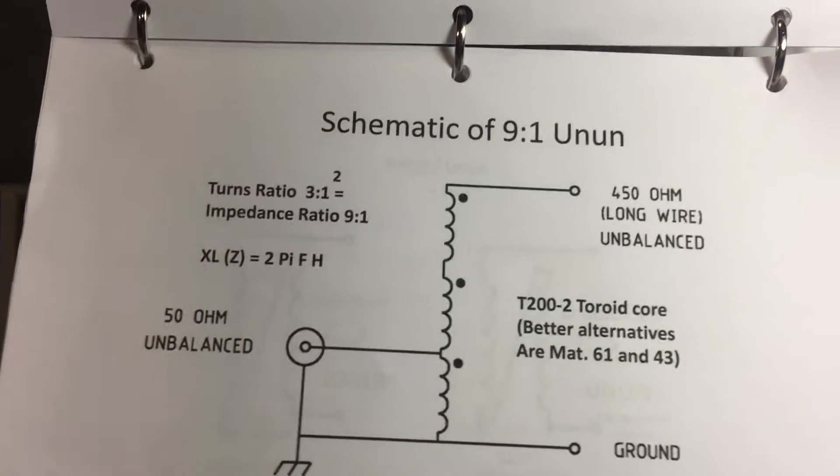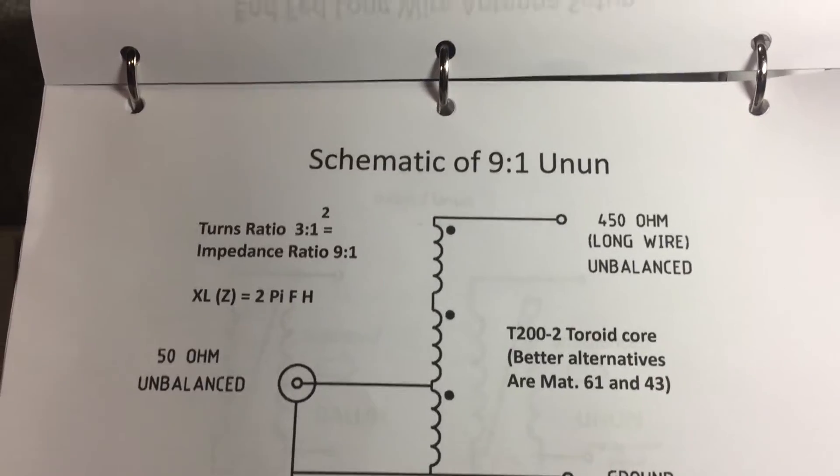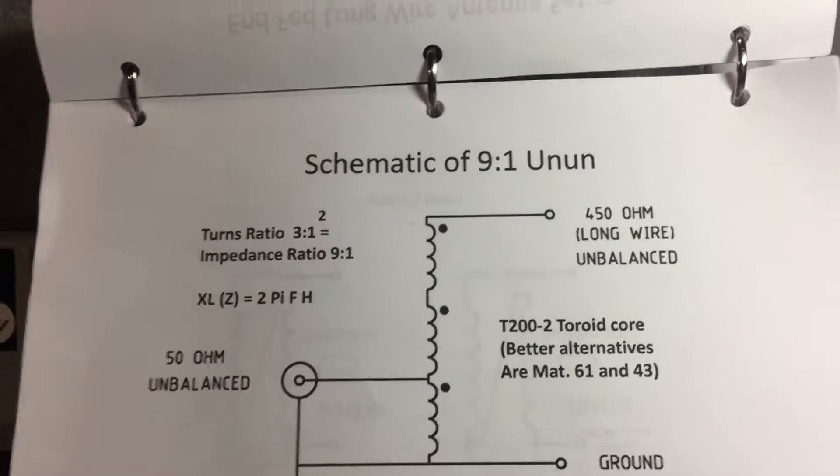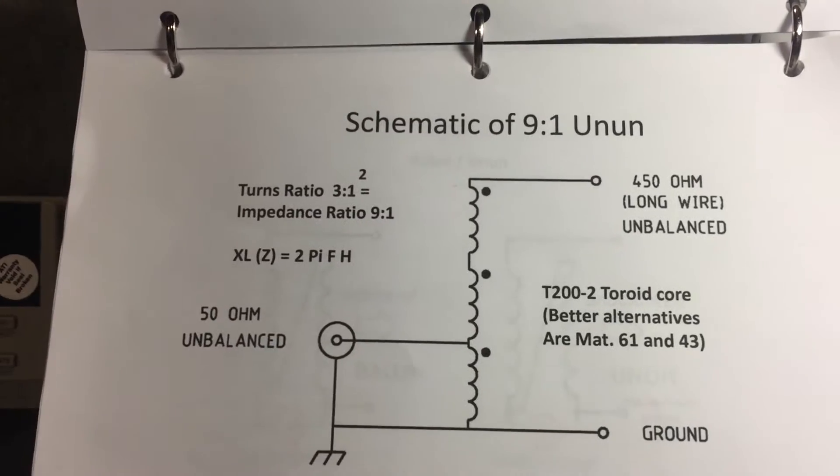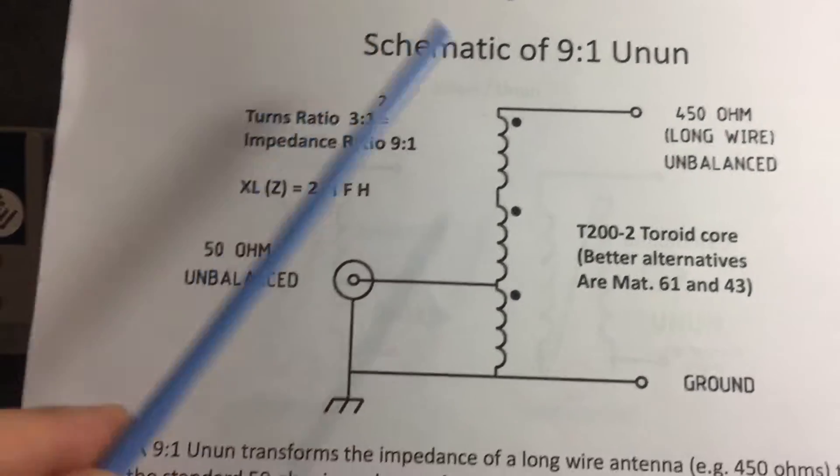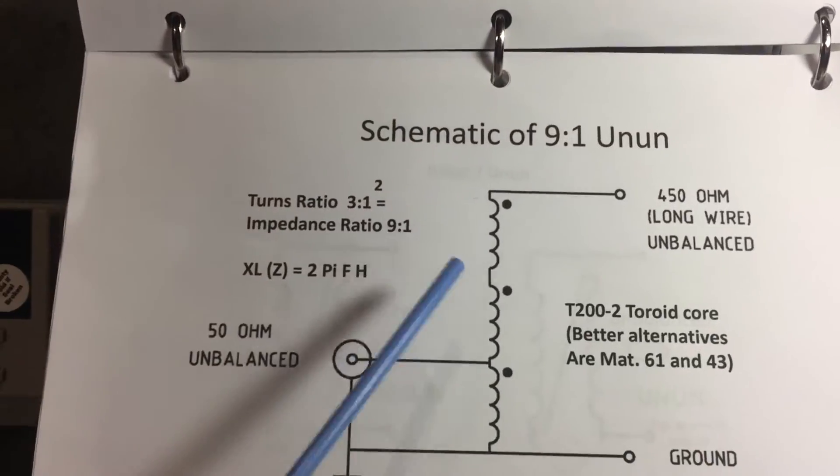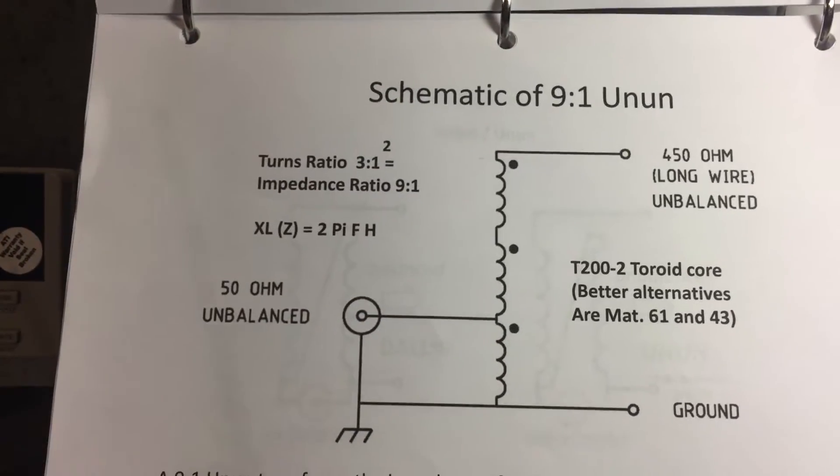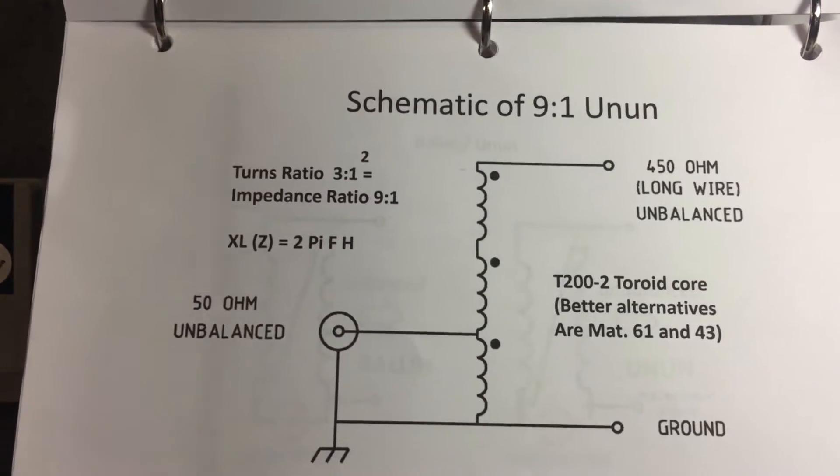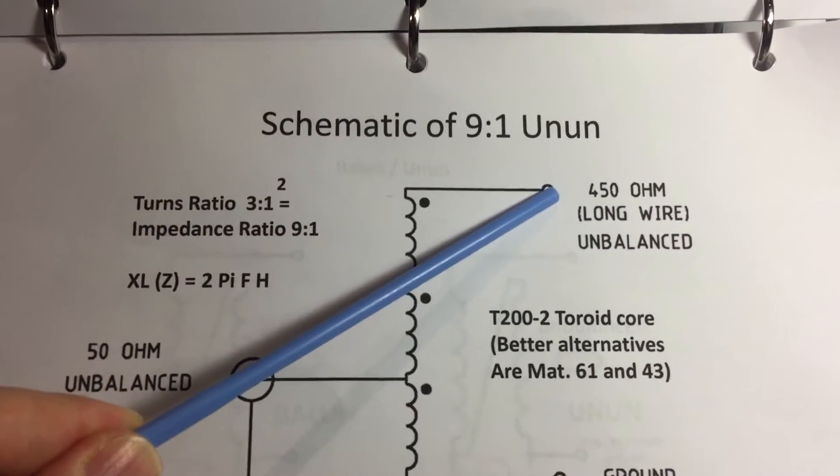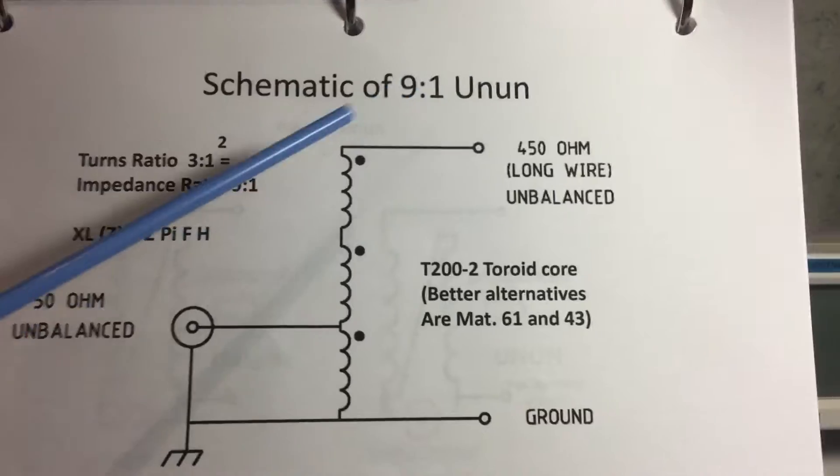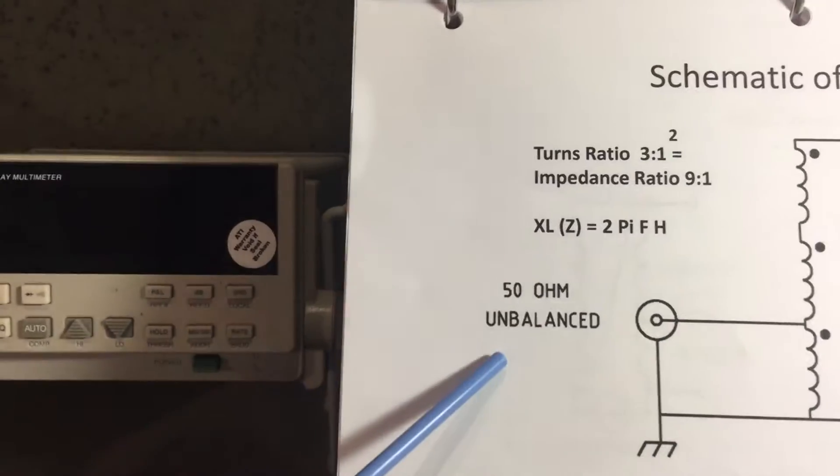All right, so now I'm back and this is part two of a four-part series. We're going to be talking about 9 to 1 ununs. This is the schematic diagram for a 9 to 1 unun. Basically what it does is it takes a 450 ohm impedance of your long wire antenna and it transforms it to 50 ohms.